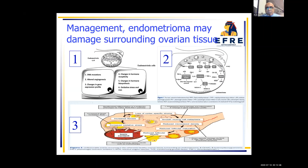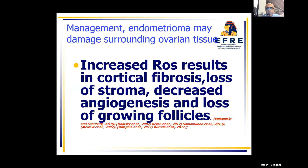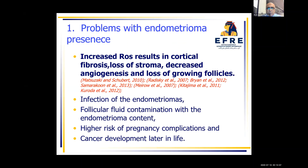The stroma is affected, and when the stroma is affected, folliculogenesis is not appropriate — it increases in number and decreases in quality. The hallmark of the basic research studies is the increased reactive oxygen species that results in cortical fibrosis. Also, the presence of an endometrioma in the ovary carries the risk of infection, follicular fluid contamination, possibility of complication during pregnancy, and possibility of cancer development. There is basic research indicating damage, but also clinical risk, although the incidence is low.